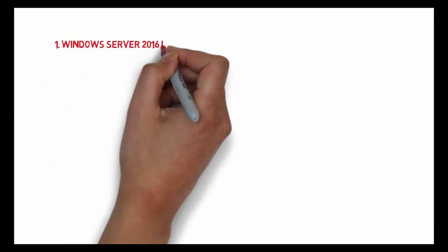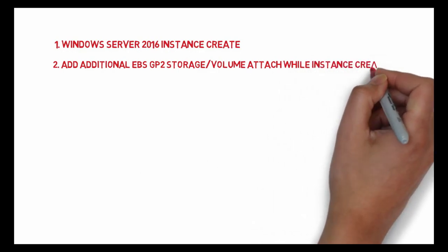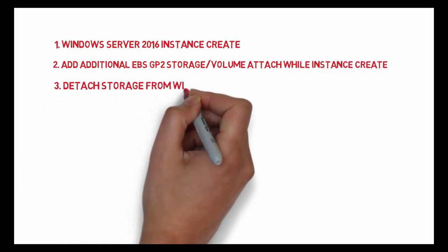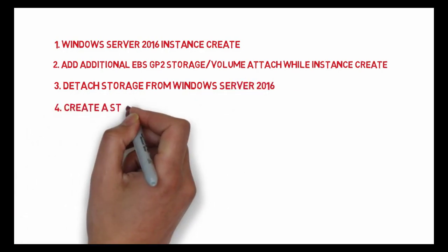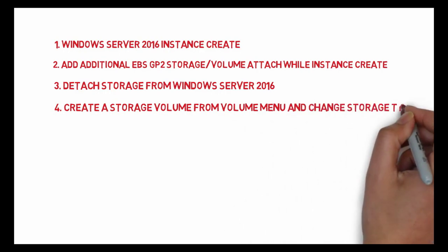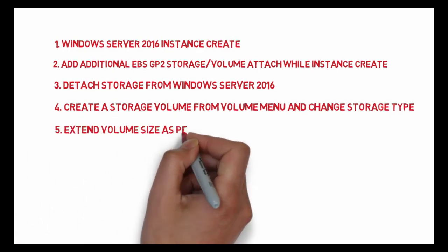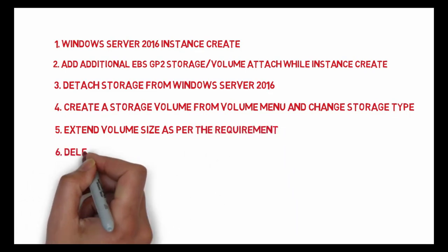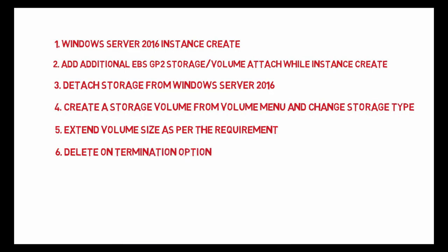First, let's look at what we'll learn in this video. First, Windows Server 2016 instance creation. Second, adding additional EBS storage or volume while creating an instance. Third, data storage volume from Windows Server 2016. Fourth, creating a storage volume from the volume menu and changing the storage type. Fifth, extending volume size as per requirement. Sixth, the delete on termination option.